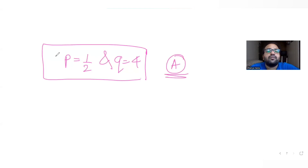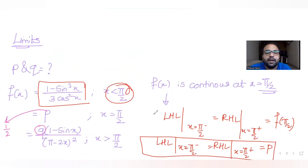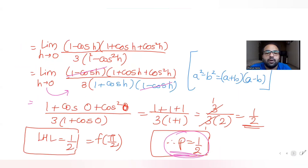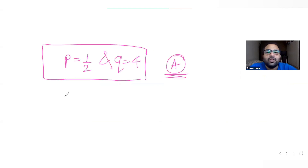The correct answer is option A. To summarize: since f(x) is continuous at x = π/2, we found the left-hand limit equals 1/2, so p = 1/2. The right-hand limit gave us q = 4. I'll meet you tomorrow with the next question — please subscribe as it takes a lot of effort to make these videos. Thank you!